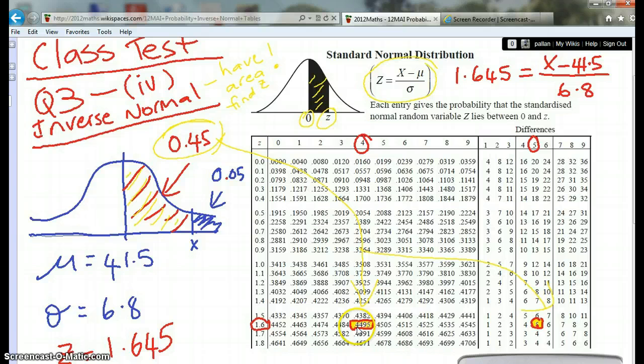We look at 0.4495 in the table. We adjust that to 0.45. We can see that the Z value was 1.645. That's where the Z value 1.645 comes from.